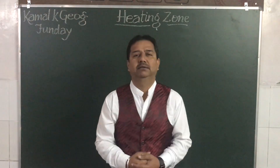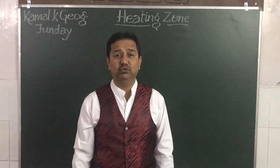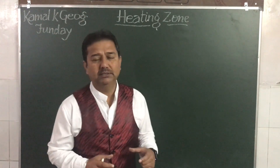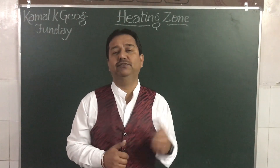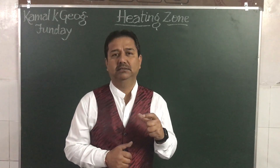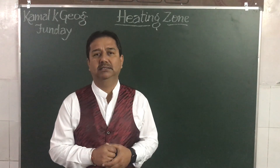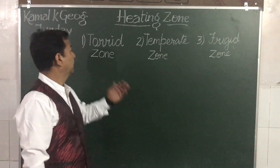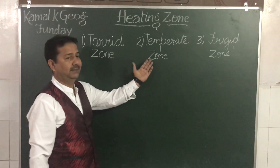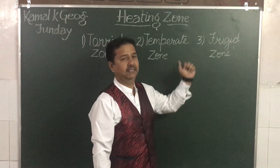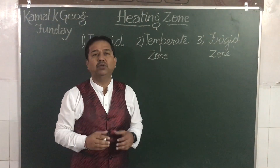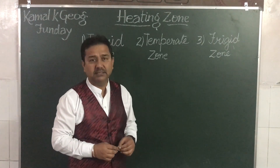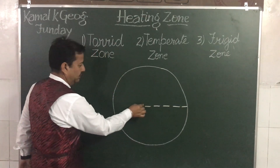Today we are going to discuss a new topic: heating zones, or latitudes, as we discussed in the previous video, which help us in dividing the Earth into different heating zones. First is the Torrid Zone, second is the Temperate Zone or Moderate Zone, and third is the Freezing Zone. Now we are going to draw these zones on the Earth.